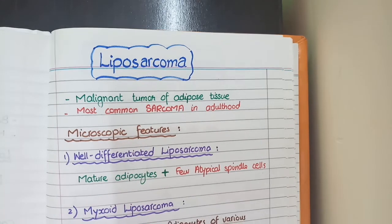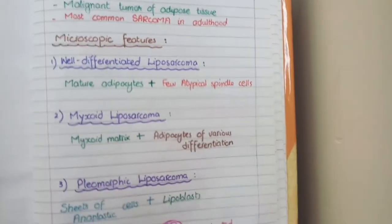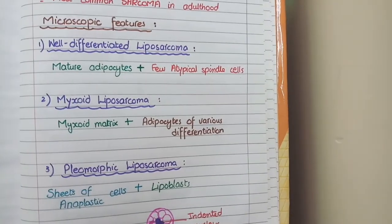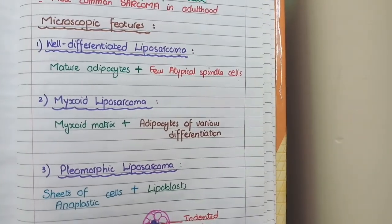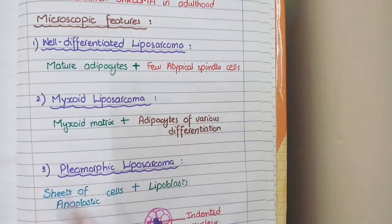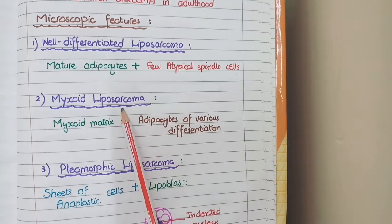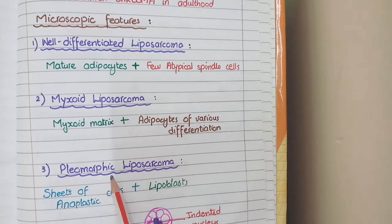According to the microscopic or histopathological features, there are three types of liposarcomas: well-differentiated liposarcomas, myxoid liposarcomas, and pleomorphic liposarcomas.